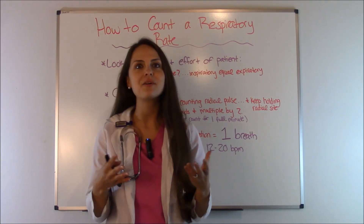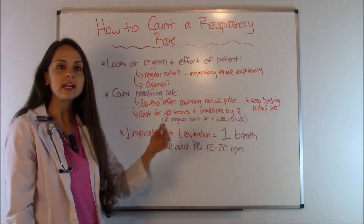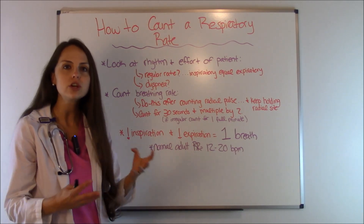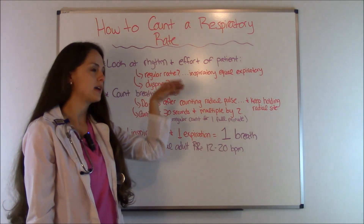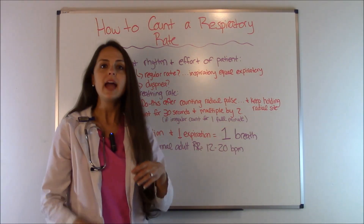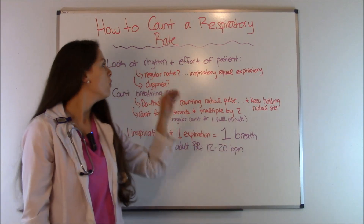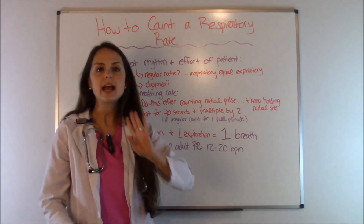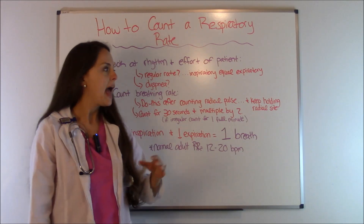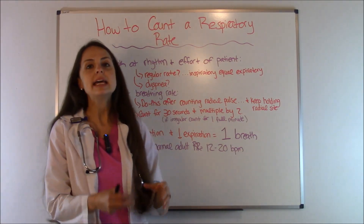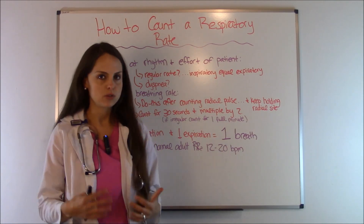First let's cover the basics. Whenever you are looking at the respiratory rate on a patient, you're looking for several things. The first thing you're going to be looking at is the rhythm, and you're going to look at the breathing effort of the patient. Whenever you're looking at the rhythm, you're looking to see if it's regular or irregular, and what you're paying attention to is the inspiratory phase and the expiratory phase.